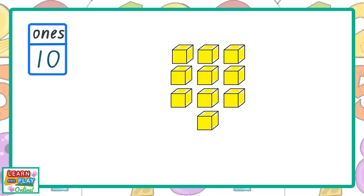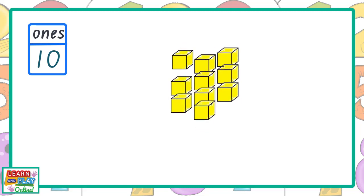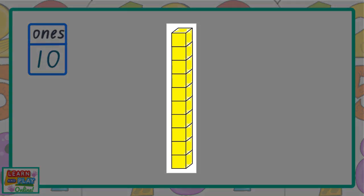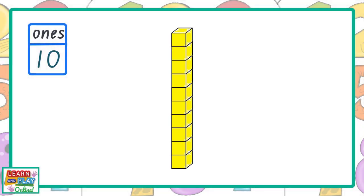Now we could keep counting forever, but there is a much faster and easier way to count large amounts of ones blocks together. If we took all of these ones here and made them a group of 10, this is what it would look like. So every time you see this, you know that it is a group of 10 ones put together. That means we can count by tens every time we see the tens block.